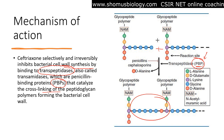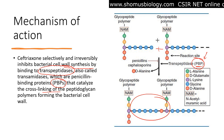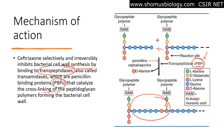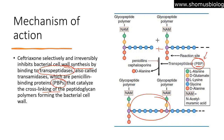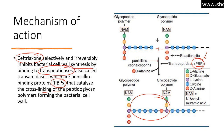When beta-lactam antibiotics — whether penicillin, vancomycin, cefotaxime, ceftriaxone, or cefazolin — are present, they inhibit the function of the transpeptidase or PBP. As a result, no cross-linking is done, no peptidoglycan wall is synthesized. Without the peptidoglycan wall, the structural integrity of the bacterial cell is compromised, leading to osmotic imbalance and bacterial death.